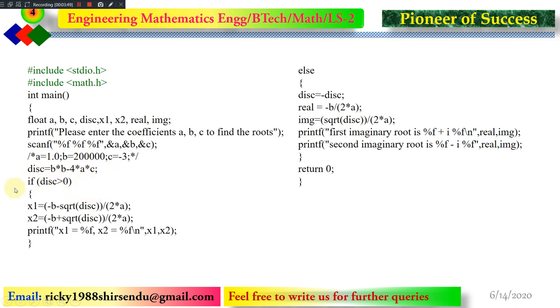And the control goes to this place, and in this place we are simply calculating x1 and x2. The formula for these two roots are given here. And then after calculation, we are printing it. If it goes to this control, it will not come to else, and it will right away go to return 0 and complete the code. And that's all.